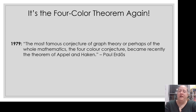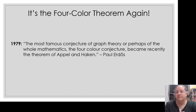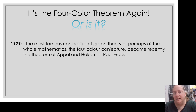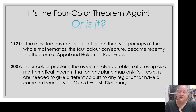Paul Erdős is a very famous mathematician. In 1979 he said, 'The most famous conjecture of graph theory, or perhaps of all mathematics, the four-color conjecture, became recently the theorem of Appel and Haken.' Erdős was pretty satisfied, and there are people satisfied because Erdős is satisfied. But again, is it actually proven? Mathematicians are not all satisfied with the type of proof we have here. Even as recently as 2007, the Oxford English Dictionary had an entry for 'the four-color problem' as 'the as-yet-unsolved problem of proving as a mathematical theorem that on any plane map, only four colors are needed to give different colors to any regions that have a common boundary.' So, the Oxford English Dictionary disagrees with Erdős — which is an interesting thing.